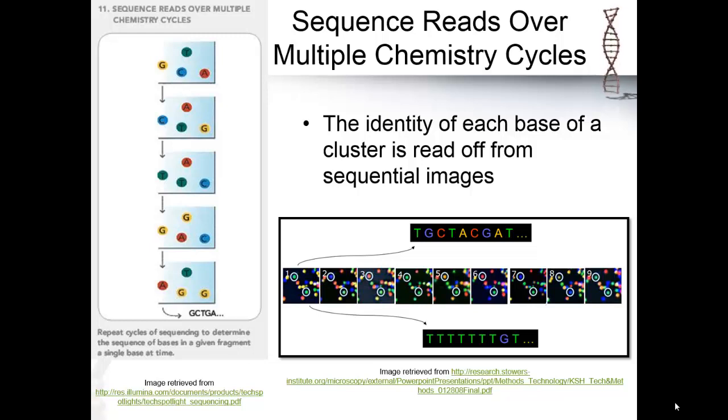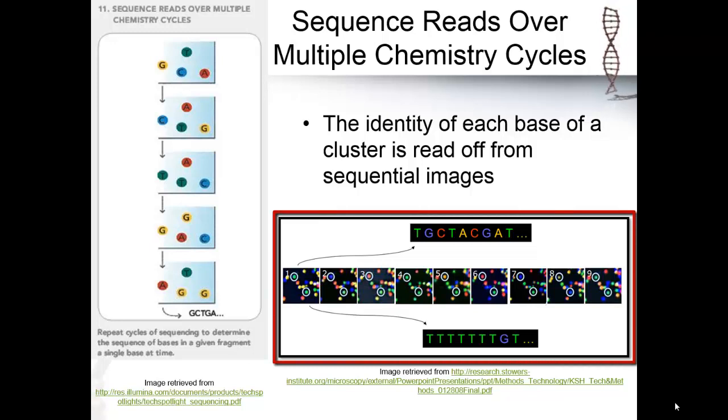In the next steps, they are sequencing the region over multiple chemistry cycles until all the sequences are finished. The identity of each base of a cluster is read off from sequential images. This image helps to demonstrate the sequence of images the machine processes for the sequencing data.